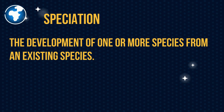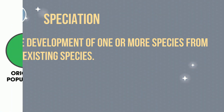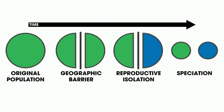Speciation: the development of one or more species from an existing species. In the example, you start with the original population, you have some type of separation, and then in the end you end up with two new species.